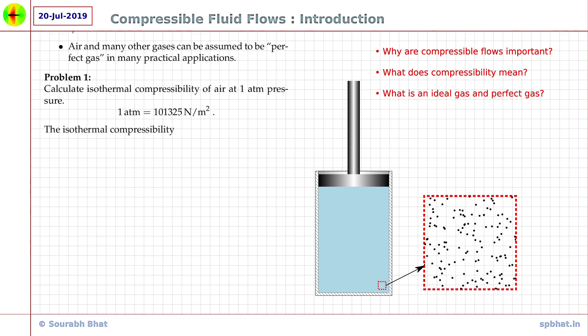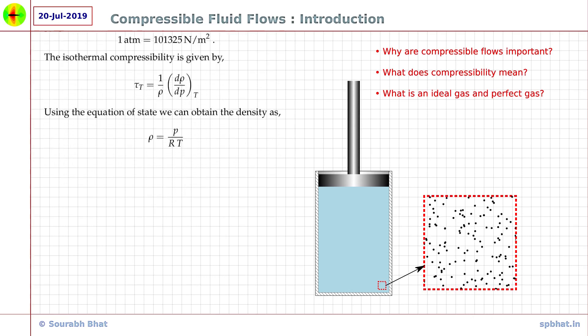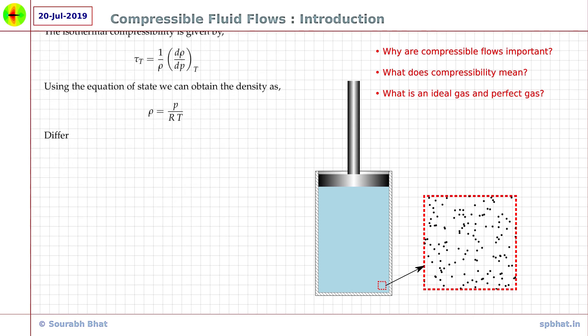The isothermal compressibility is given by tau is equal to 1 over rho d rho by dp at constant temperature. Using the equation of state, the density can be calculated as rho is equal to p divided by RT, and therefore d rho by dp can be calculated assuming the temperature to be constant as 1 over RT.